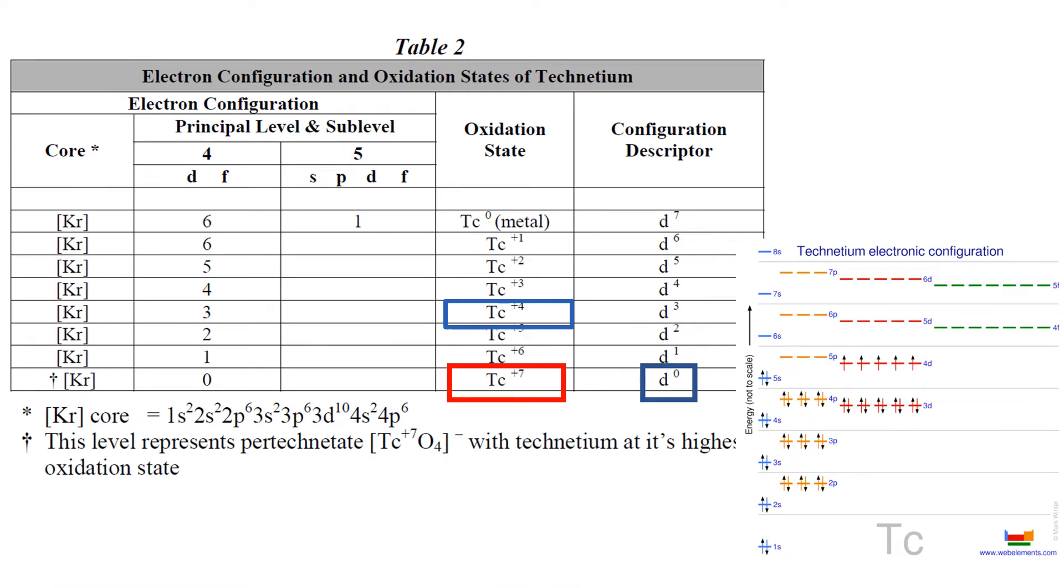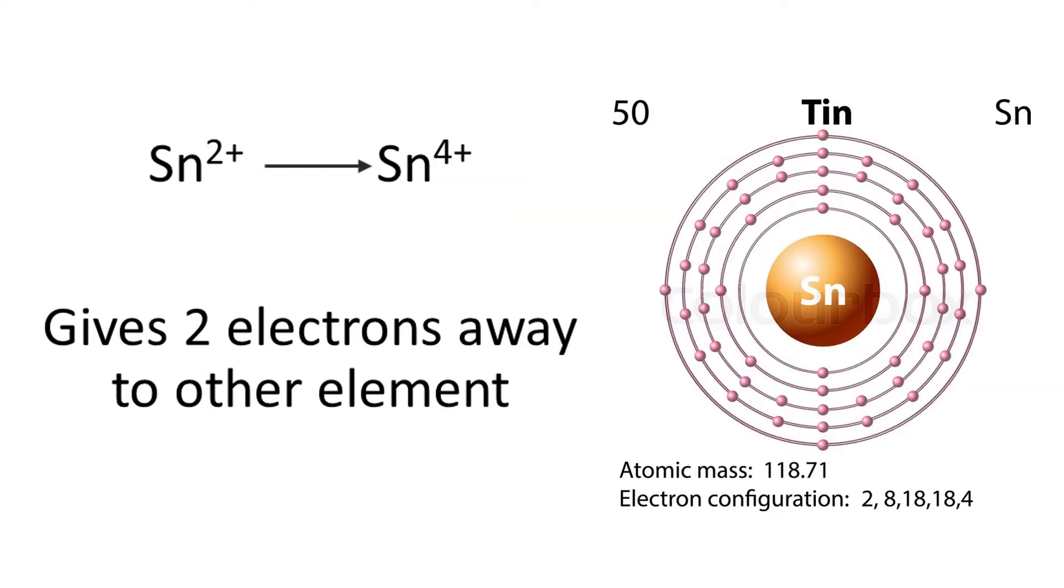In order to get the technetium plus 7 as it is when you get it from the generator in the form of pertechnetate, you want to add some electrons to get it to plus 4 which makes it ready for labeling. Tin likes giving electrons away, this is your stannous chloride in your kit and it's the ideal companion for technetium to up the oxidation state to a useful species.